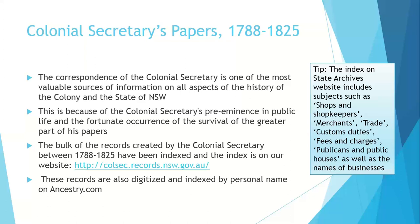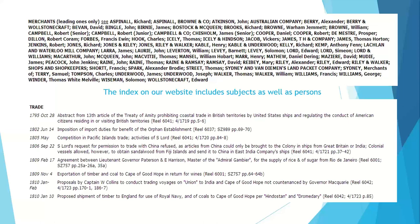The correspondence of the colonial secretary is one of the most valuable sources of information we have, primarily because he was the main public servant in New South Wales at the time, and also because the records have survived. The bulk of the records created between 1788 and 1825 have been indexed on our website, which includes subjects as well as occupations. The records are also digitised and indexed by personal name on Ancestry.com. Here are some examples from the index showing names of merchants and references to trade generally.